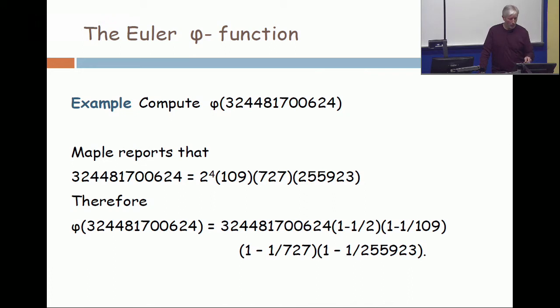And it took Maple about one-tenth of a second to report that the factorization of that number into primes is 2⁴ times 109 times 727 times 255,923. 109 is a prime, 727 is a prime, and 255,923—that's a prime. So the Euler phi function of that is 324,481,700,624 times (1 - 1/2) times (1 - 1/109) times (1 - 1/727) times (1 - 1/255,923). Now, if you had to, you could do that by hand in an hour. And with Maple, you can do it as fast as you can type it.